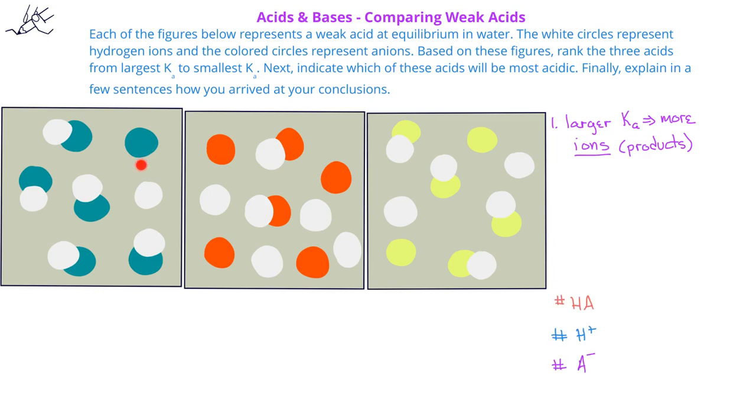When we compare these figures, the first one has one dissociated weak acid and five molecules that are undissociated. The second image has four dissociated ions - four anions that have been dissociated and four hydrogen ions that have been dissociated - and it has two molecules that have not dissociated. The third picture has two hydrogen ions and two anions that have ionized.